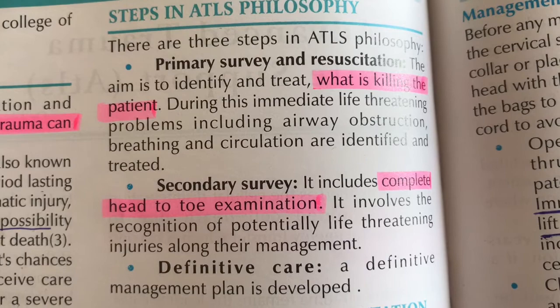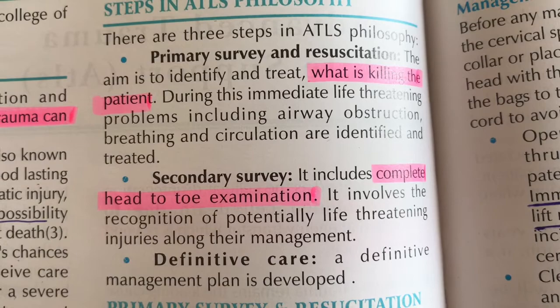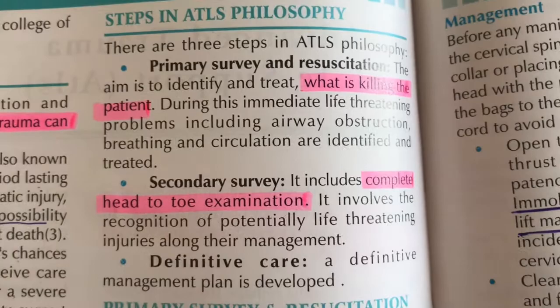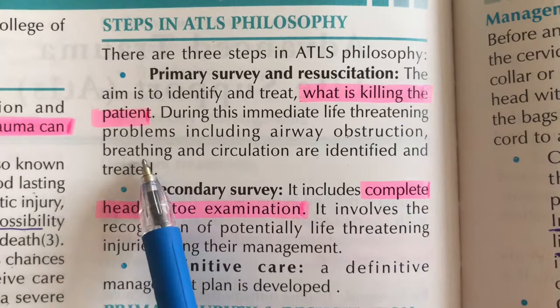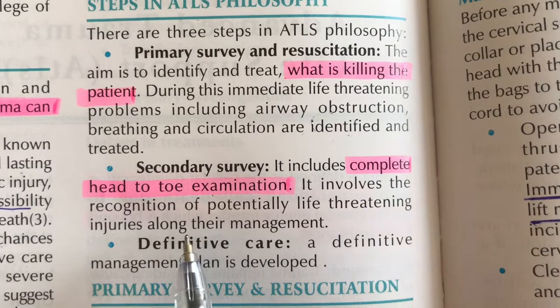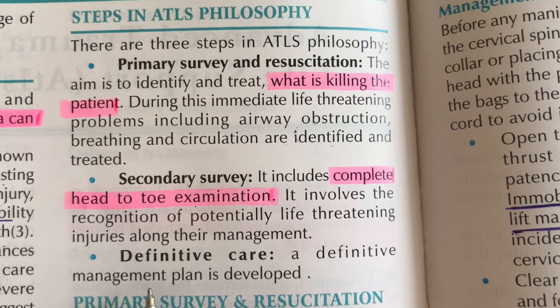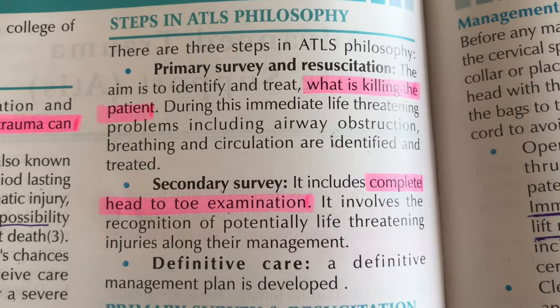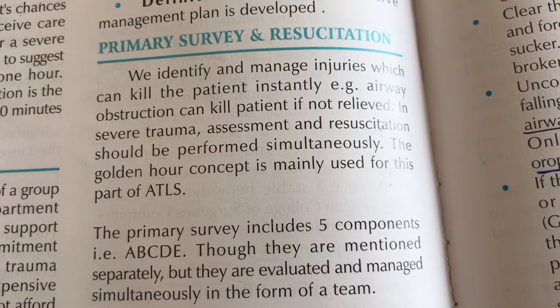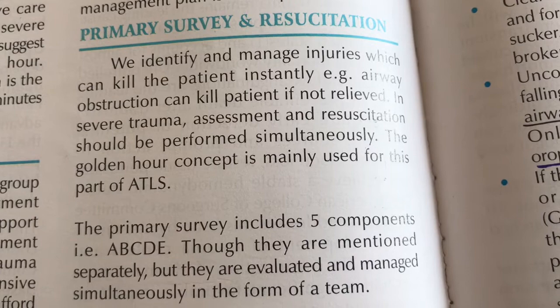In primary survey and resuscitation, we identify and treat what is killing the patient. We mostly address airway obstruction, breathing, and circulation. These are identified and then treated. In severe trauma, assessment and resuscitation should be performed simultaneously.